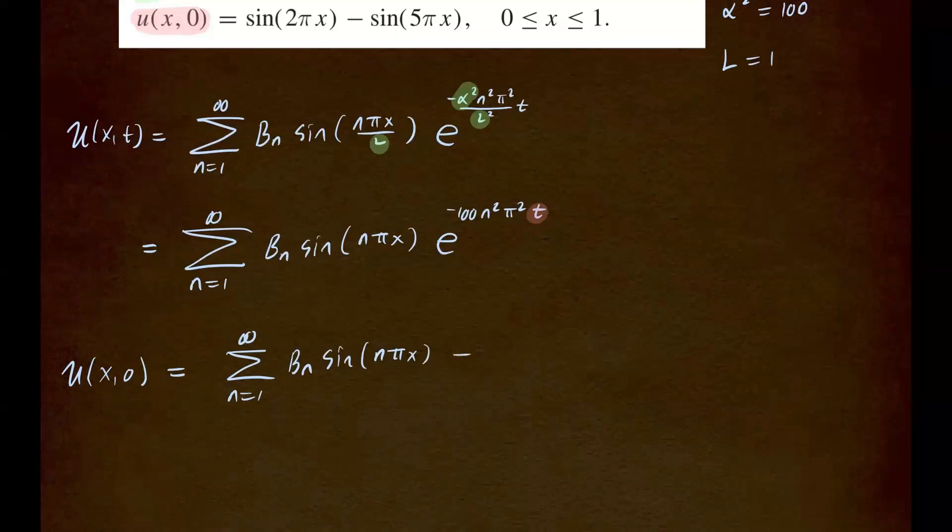So this is what we have. And we're going to set this equal to our function, this function right here. That's your f of x. So this is going to be equal to sine of 2 pi x minus sine of 5 pi x. So that's our initial temperature.